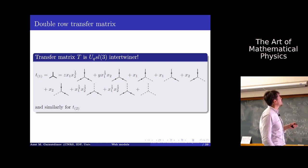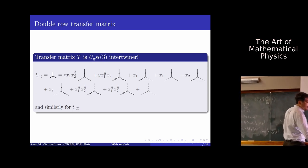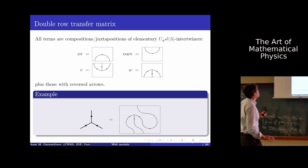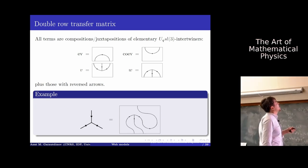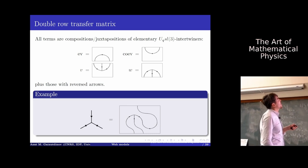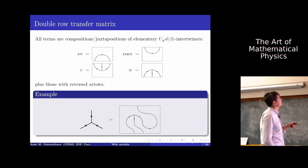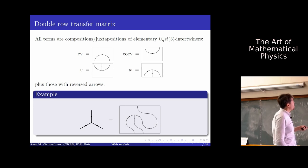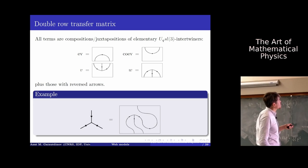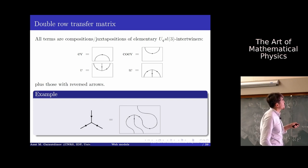Each local piece is a particular U_q(SL3) intertwiner, constructed from simple elementary blocks such as evaluation and co-evaluation maps — which are U_q(SL3) intertwiners — and maps that embed the trivial representation into the cube of the fundamental, or project the cube of the fundamental onto the trivial representation. The first term of the elementary transfer matrix is a composition of co-evaluation with the projector onto the singlet.